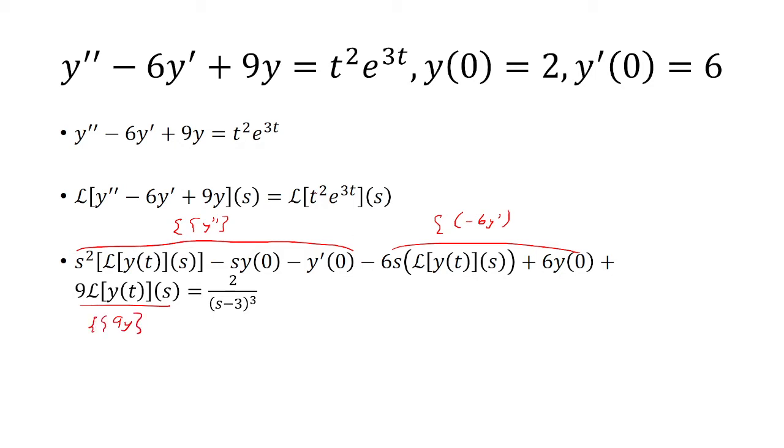And then the Laplace transform of t squared times e to 3t is just 2 over s minus 3 quantity cubed. So this 3 will just be over here.